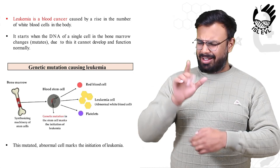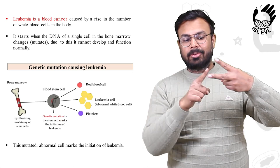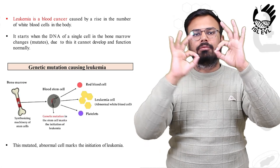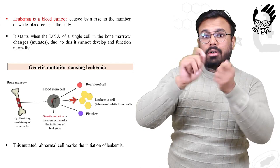Leukemia is a blood cancer caused by a rise in the number of white blood cells in the body. It starts when the DNA of a single cell in the bone marrow changes or mutates. Due to this, it cannot develop and function normally.